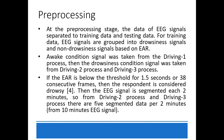At the processing stage, the EEG signal data is separated into training data and testing data. For training data, EEG signals are grouped into drowsy signal and non-drowsy signal based on EAR. Awake condition signals were taken from driving 1 process, and drowsy condition signals were taken from driving 2 and driving 3 processes. If the EEG signal is below the threshold for 1.5 seconds or 39 consecutive frames, the respondent is considered drowsy. The EEG signal is segmented every 2 minutes, so from driving 2 and driving 3 processes there are 5 segmented data per 2 minutes.